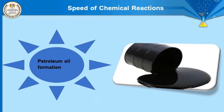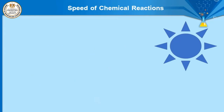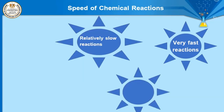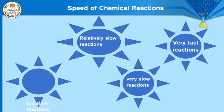Oil formation is a type of too slow chemical reaction, as it takes millions of years to form oil. To summarize: number one, very fast reactions take a very short period of time — like fireworks, which take seconds. Number two, relatively slow reactions take minutes or hours — like the reaction between oil and sodium hydroxide to form soap. Number three, very slow reactions take months or days — like iron rusting. Number four, too slow reactions take millions of years — like the formation of oil.